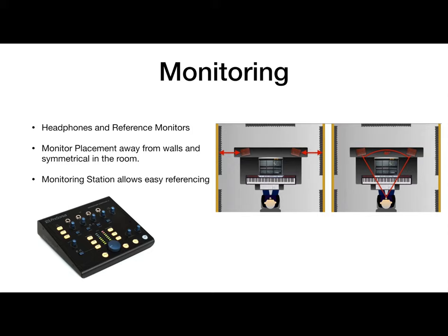Walls and corners act as bass traps. Parallel walls that don't absorb or diffuse sound can create nodes or standing waves and affect your sound dramatically. Speakers should be away from the walls unless specifically designed to be wall-mounted, and should point toward the mixer's ears. We'll talk more about room acoustics in another lesson.